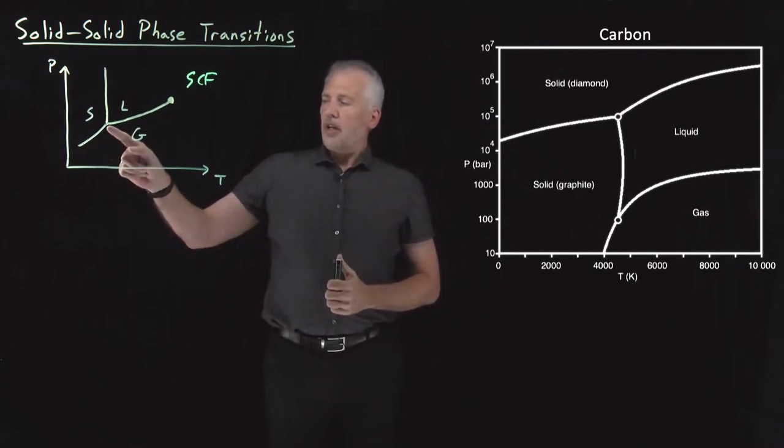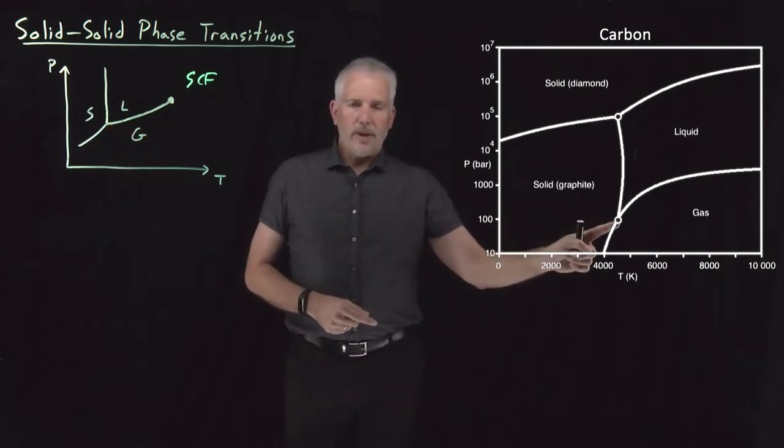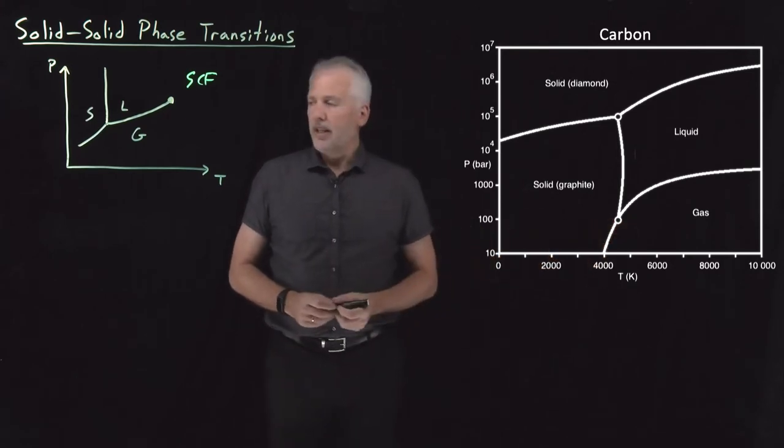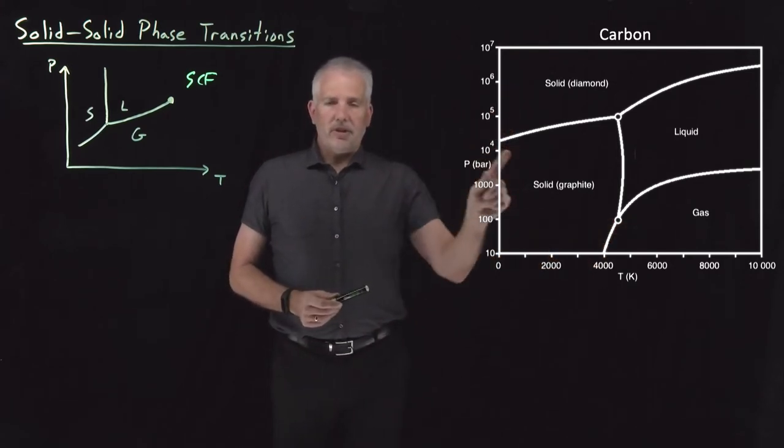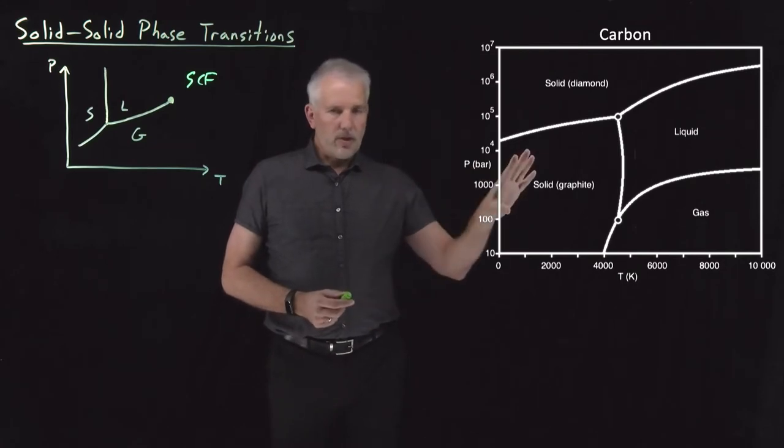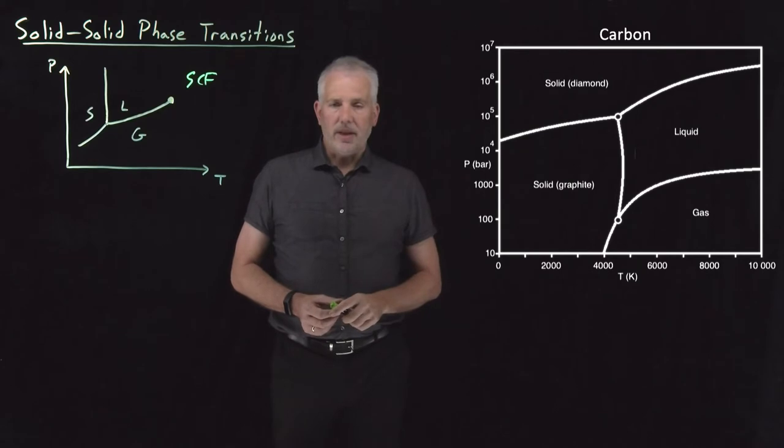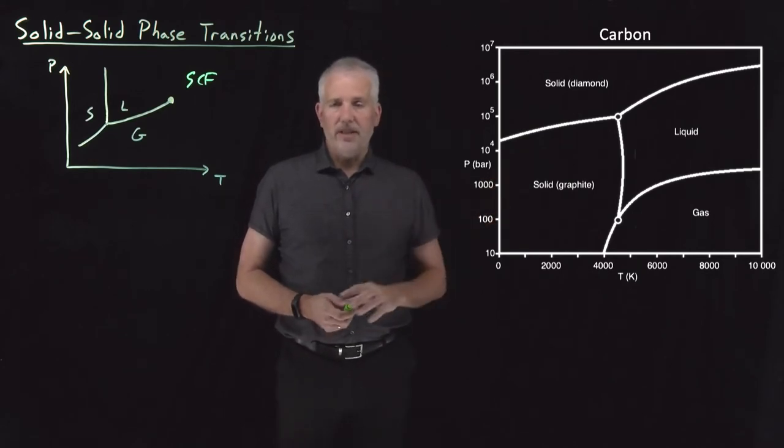We still have a triple point where we can have solid, liquid, and gas coexisting, the solid being graphite, but we have two different solid phases. Everything we've learned about phase diagrams can, again, be applied to understand this phase diagram. What this phase diagram tells us is which phase is most stable at a particular set of conditions.